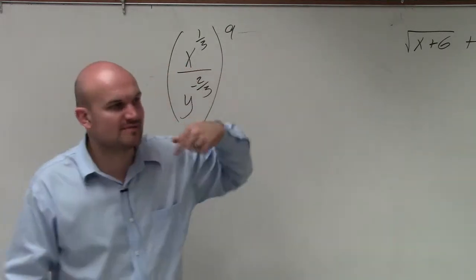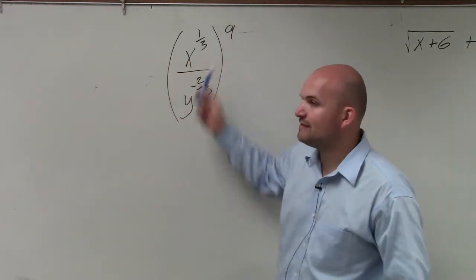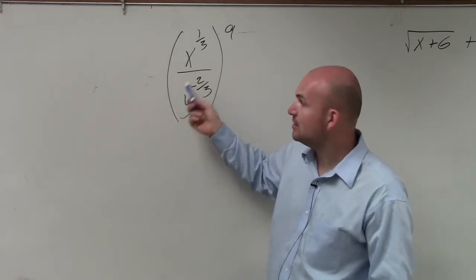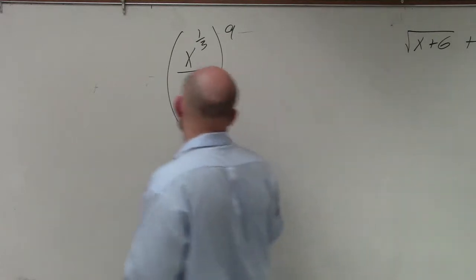If you remember, one of the rules of exponents we went over was the power to quotient rule. Basically what that says is when you have a quotient, a division problem raised to a power, that power goes to both your terms in your numerator and your denominator.